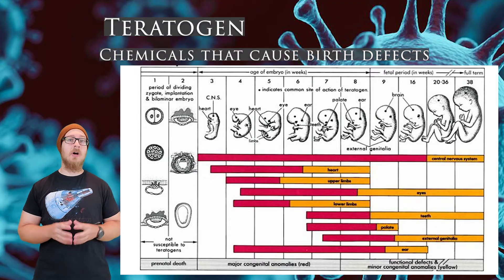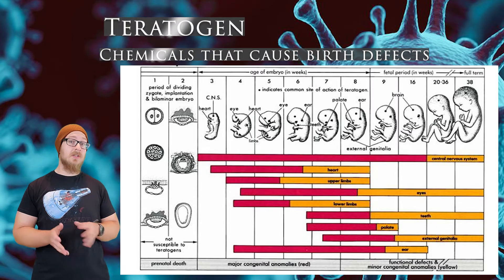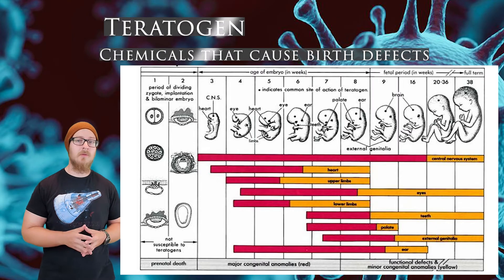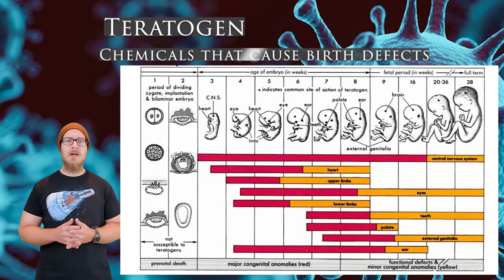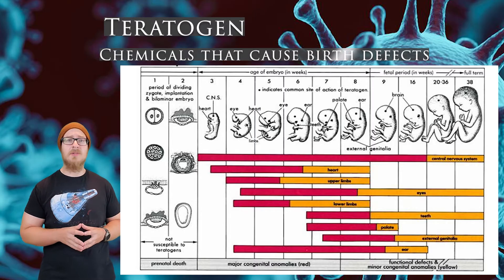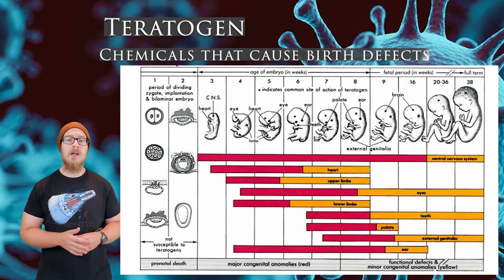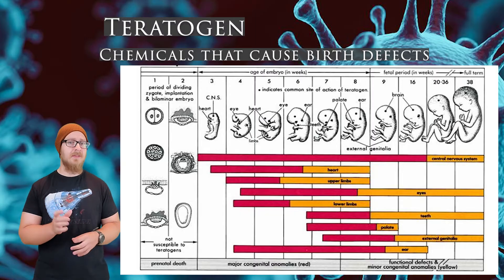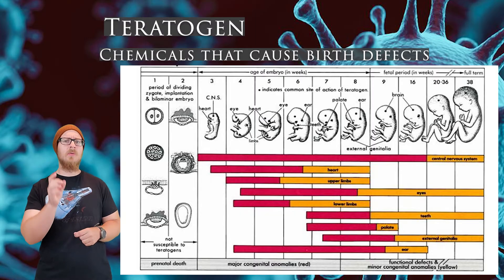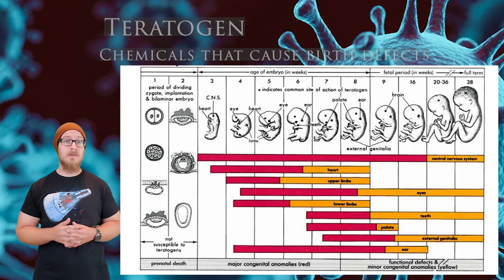Teratogens are chemicals that cause birth defects. The PCBs we discussed in the water pollution video are an example, and one that was common for a while was a chemical called PFOA, which was used in the production of Teflon, the non-stick coating on many of your frying pans.